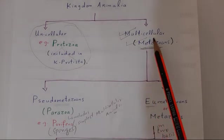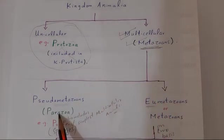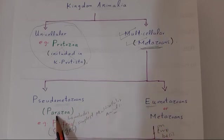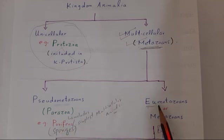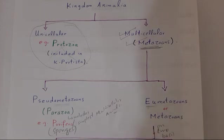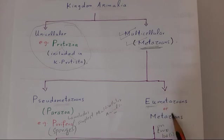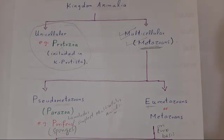Multicellular animals in Kingdom Animalia are further divided into sub-kingdom Parazoa and sub-kingdom Metazoa or Eumetazoa. Parazoa includes the simplest multicellular animals — just a collection of cells not arranged into tissues and organs — and the only phylum is Phylum Porifera or sponges. Eumetazoans are true multicellular animals whose cells are arranged into tissues, organs, and organ systems. All phyla from Phylum Cnidaria to Phylum Chordata are included in Metazoa. They are further divided into various groups which we will study later.